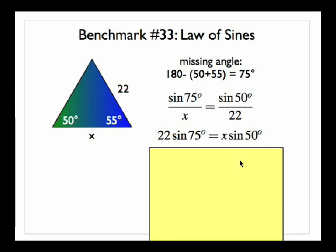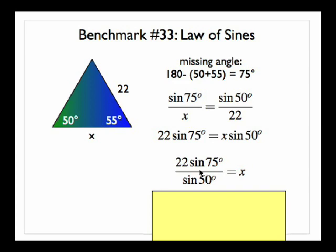To get that x by itself, I'm going to go ahead and divide by the sine of 50. So I have 22 sine of 75 divided by the sine of 50, equaling x.